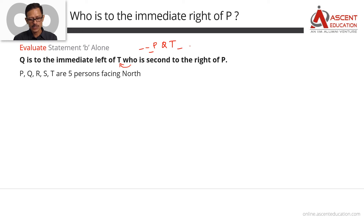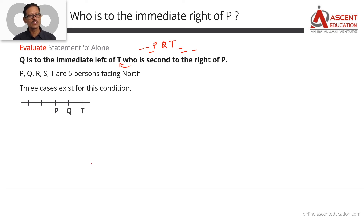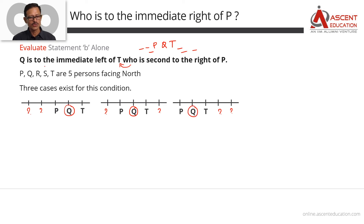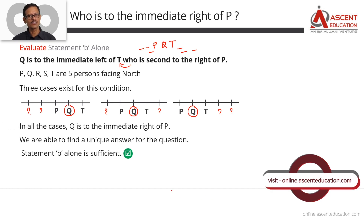With Statement B, P, Q, and T form a fixed sub-group. This group of three can be placed in the rightmost 3, middle 3, or leftmost 3 positions among the 5 seats. R and S occupy the remaining two spots and can be arranged as RS or SR. However, regardless of where R and S sit, Q is always to the immediate right of P in every possible arrangement.